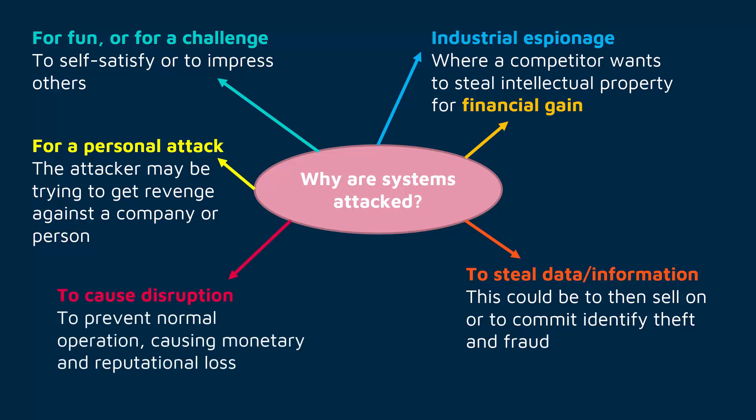The last reason is that an attacker may do this just to cause disruption — trying to cause chaos — perhaps for their own fun, or just enjoying seeing a company struggle to operate normally. But it may also be to cause monetary loss, since a company can't make money if their systems are down, or to cause reputation loss. Imagine if your bank's website went down and you couldn't access your money — that would cause massive damage to the company's reputation and disrupt their normal operation. An example of this is a denial of service attack on a website, causing it to go down so customers can't use it.